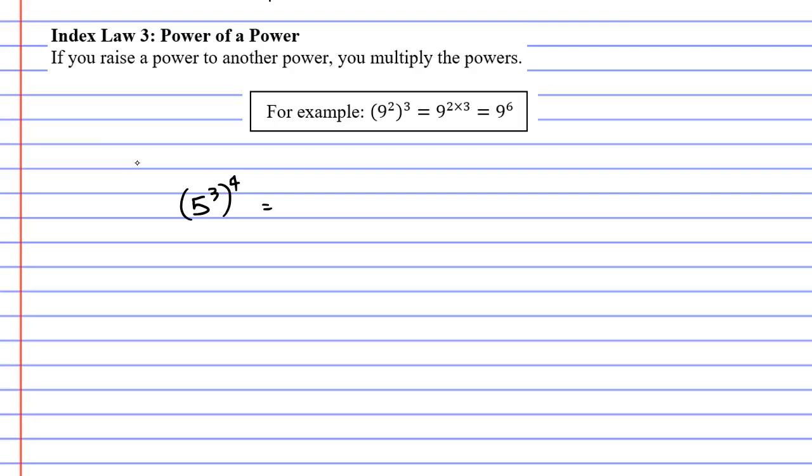So, what does that mean? Well, let's start by looking at the power on the outside of the brackets. This states that we're going 5 to the power of 3 times 5 to the power of 3, 4 times.